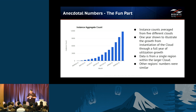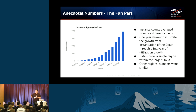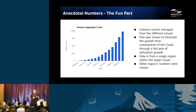The data is from a single region within a large cloud. These numbers came from customers running medium to large clouds — this is a single data center, single region of many. Most of these customers are running dozens of these. The other regions' numbers were similar, so there's no big discrepancy where a small cloud is pulling down the numbers from an incredibly large one.